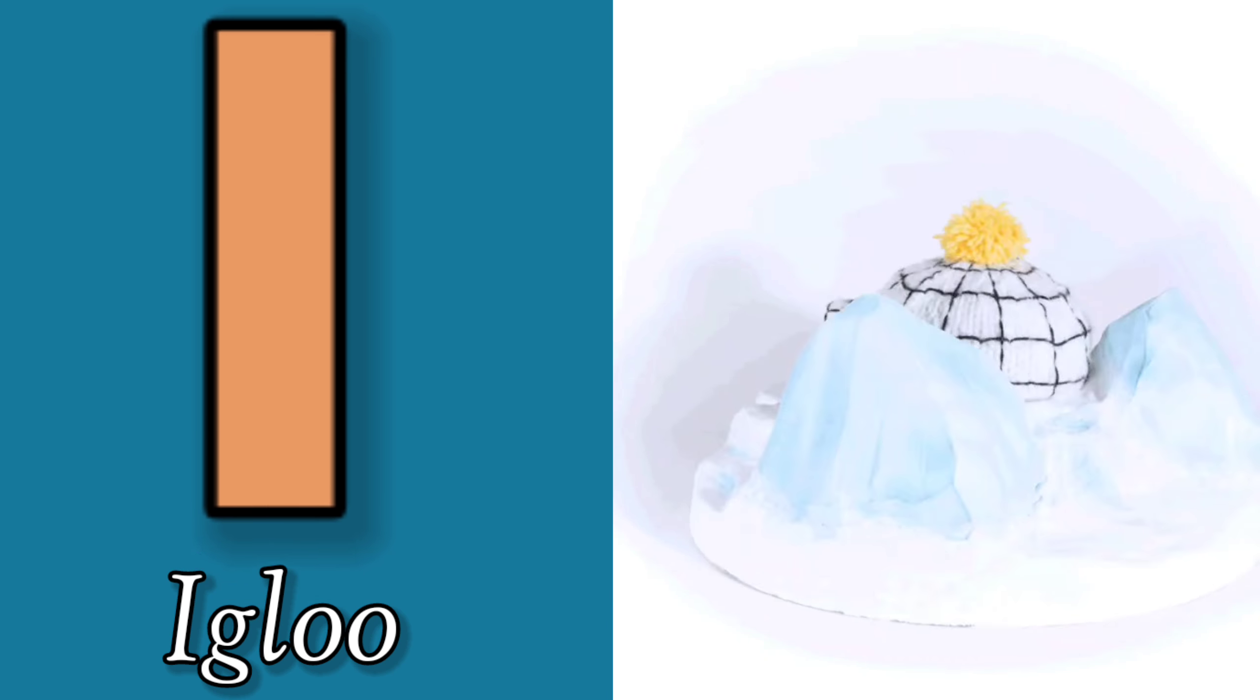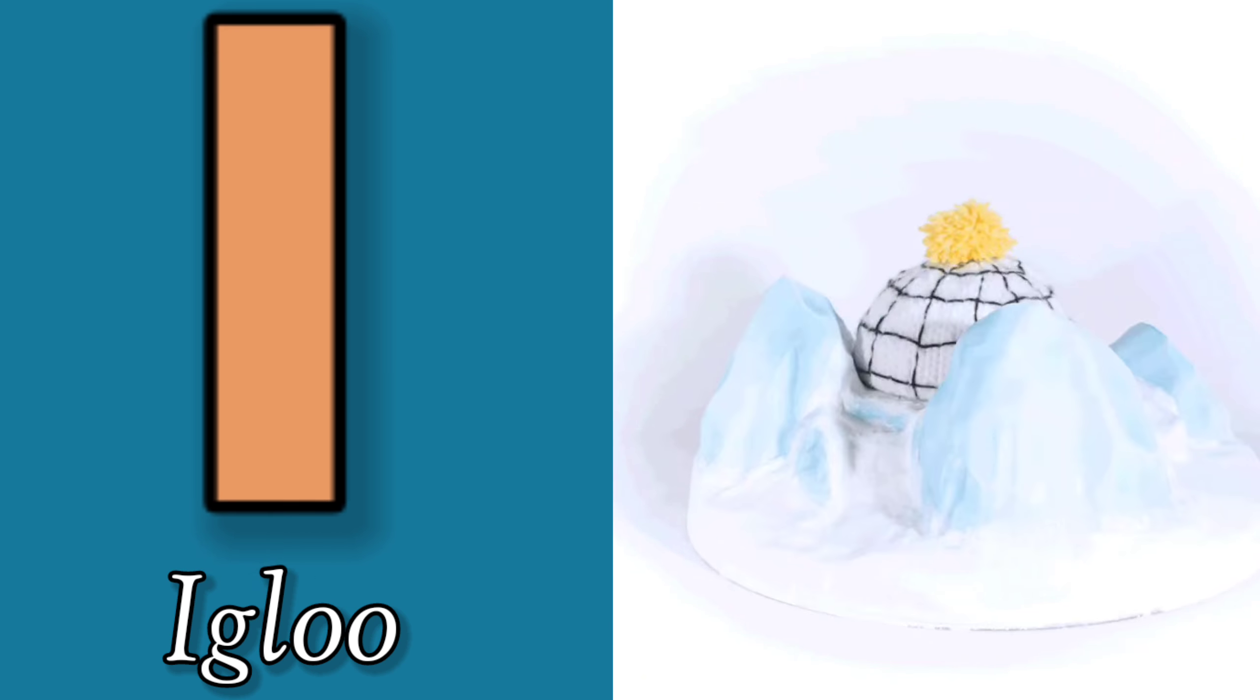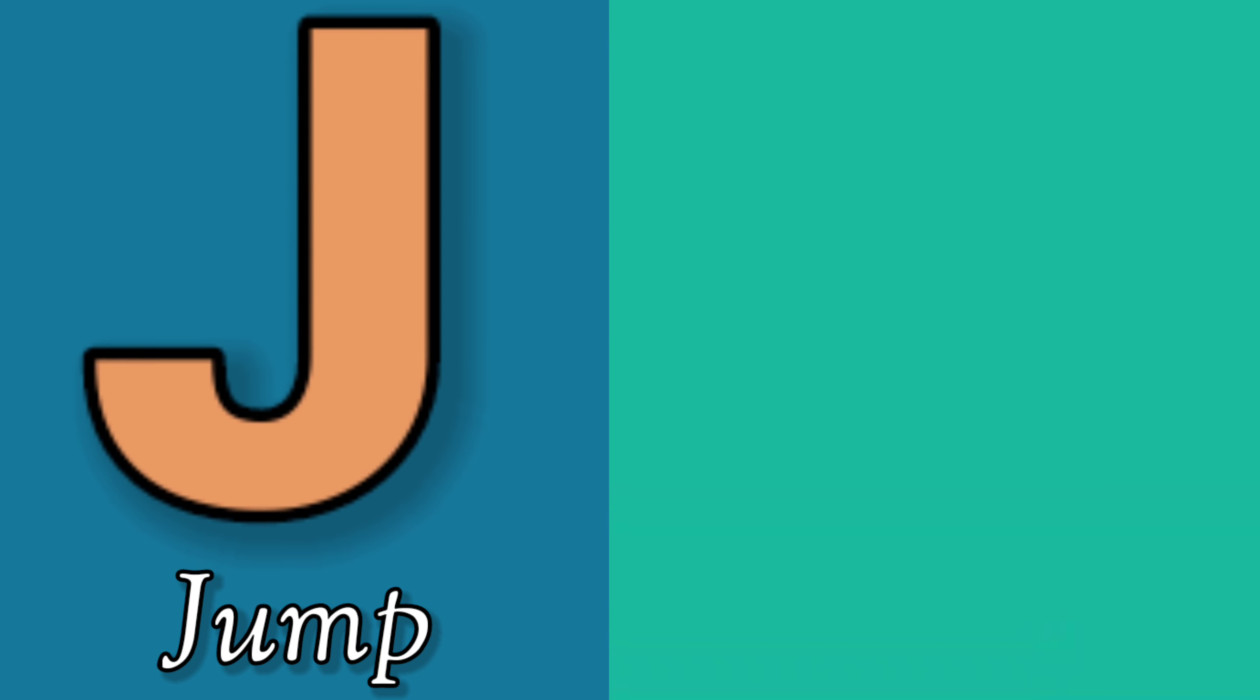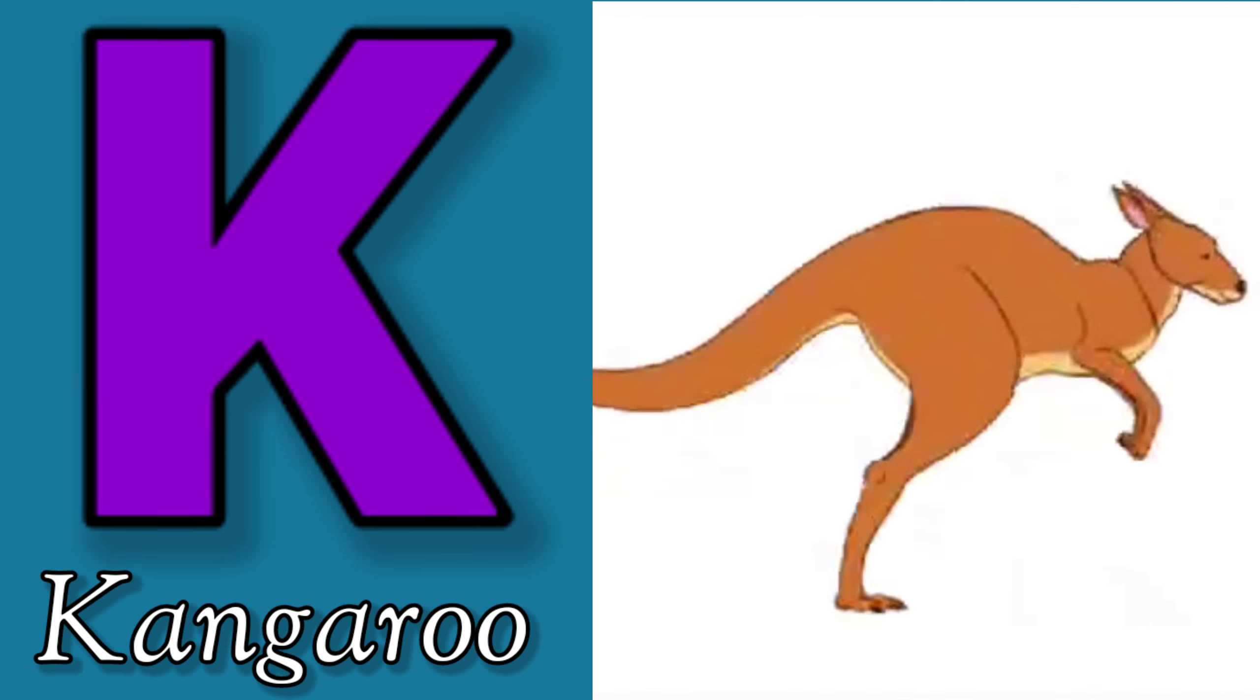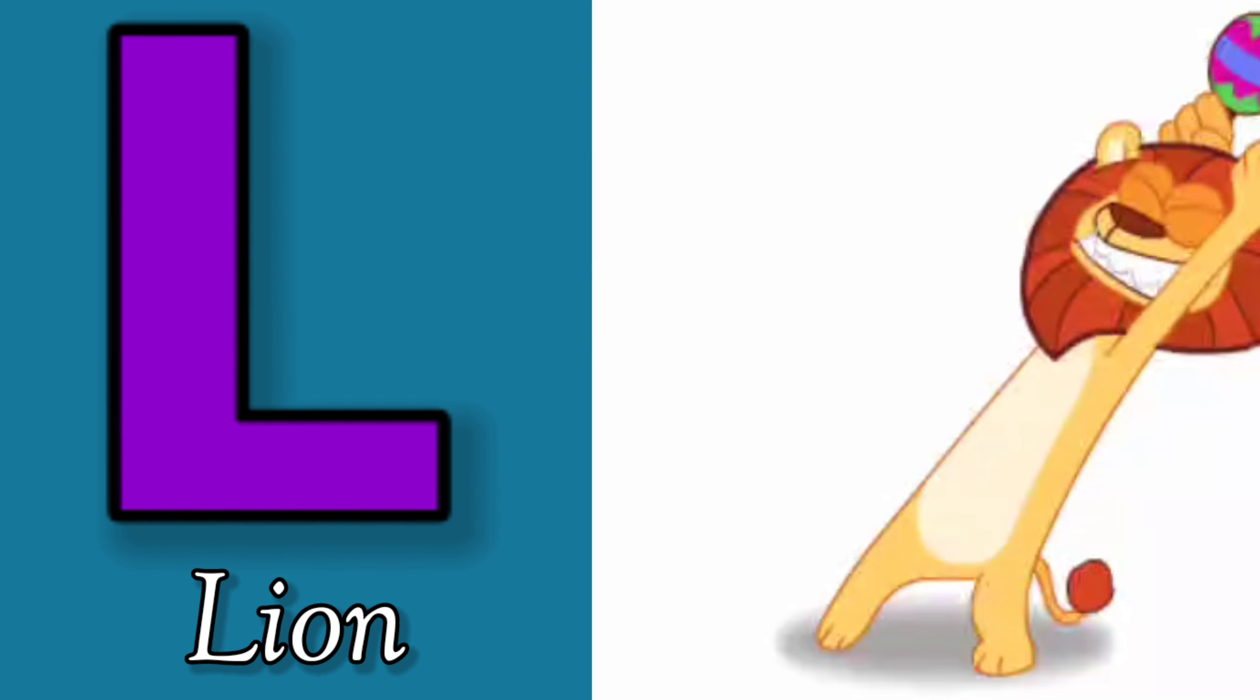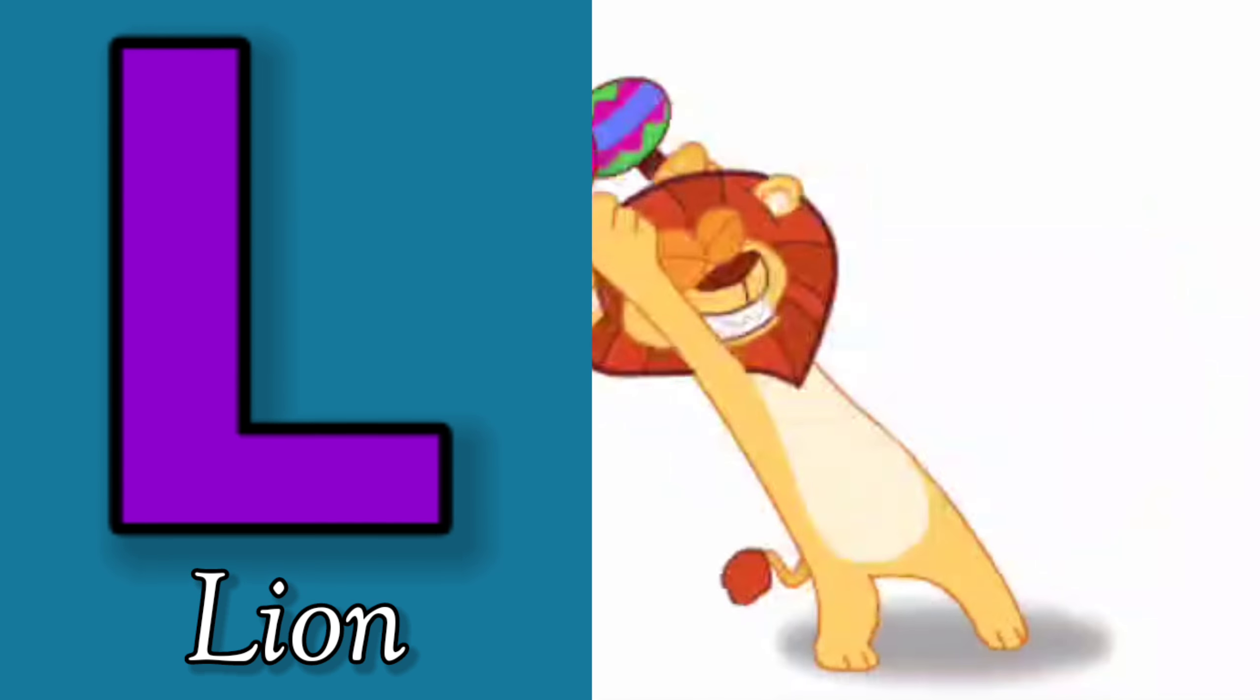I is for Igloo, I-I-Igloo. J is for Jump, J-J-Jump. K is for Kangaroo, K-K-Kangaroo. L is for Lion, L-L-Lion.